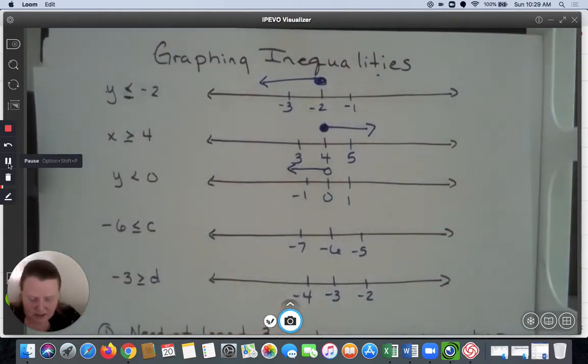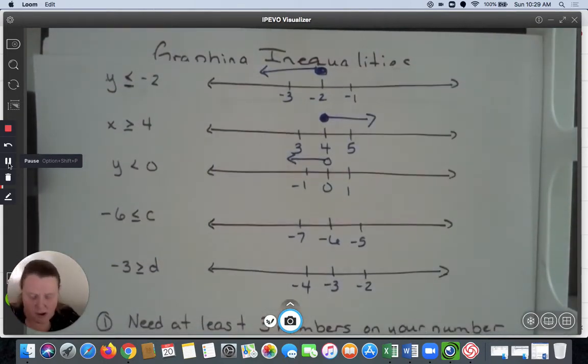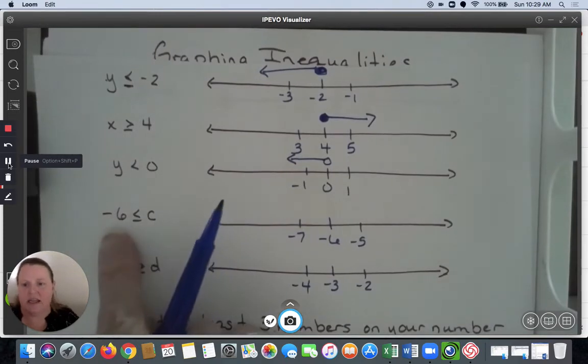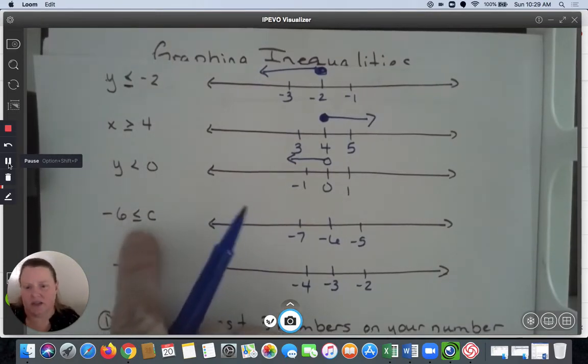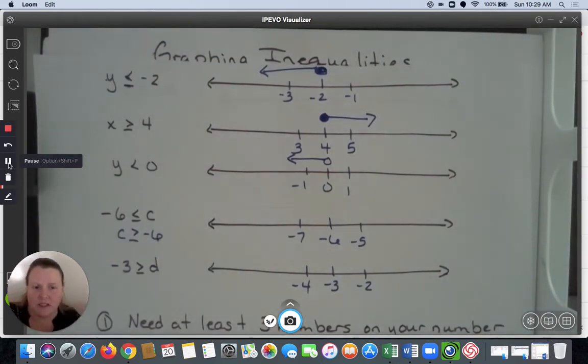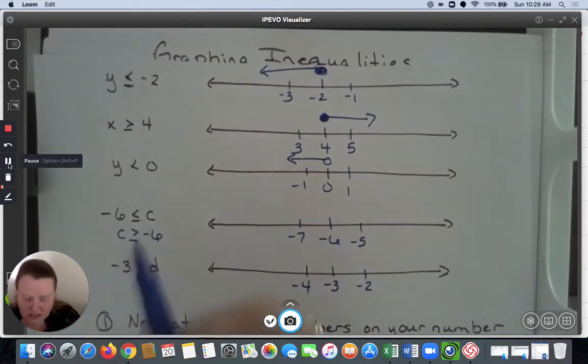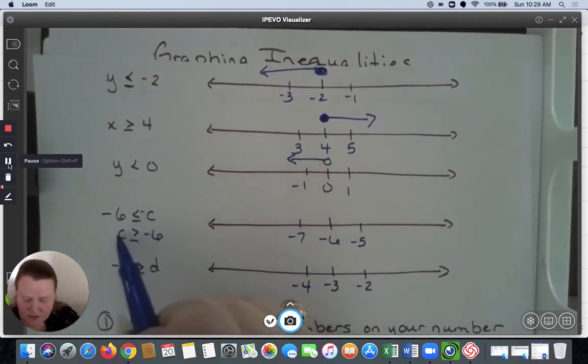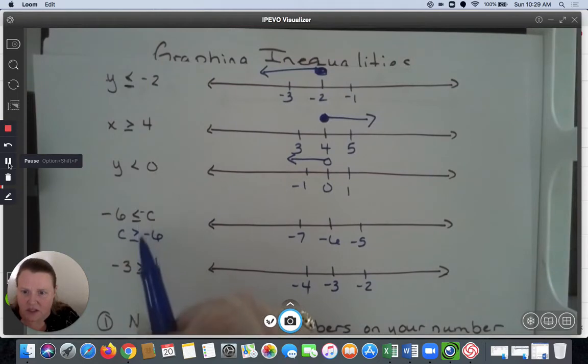Now what happens here is I have to think about this problem when they're backwards. This is -6 ≤ c, which really means c ≥ -6. Those two representations mean the same thing. C is greater than on this side and on that side, regardless of the symbol in the middle. That's why I'm going to have c go first when I want to graph it.